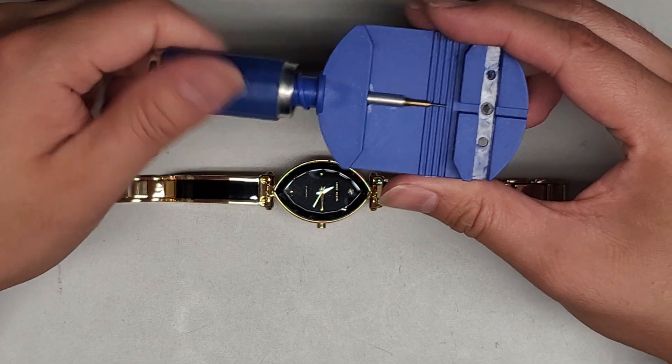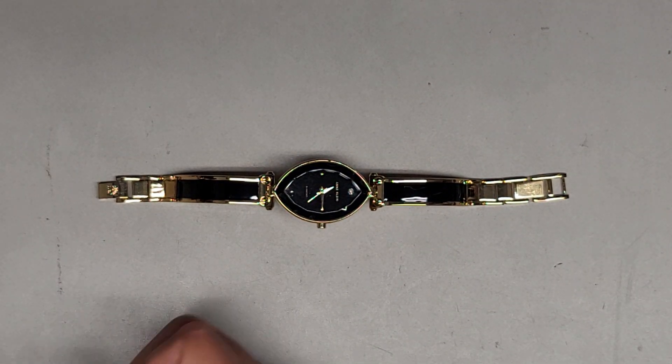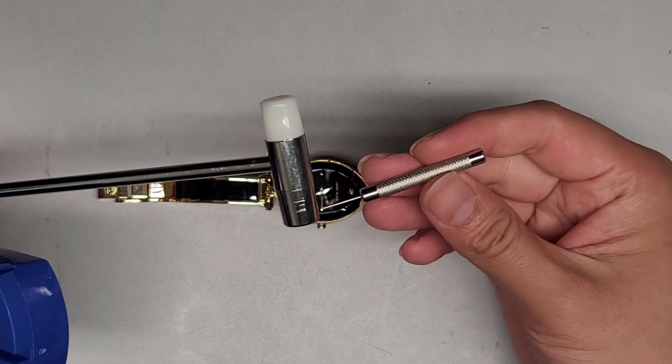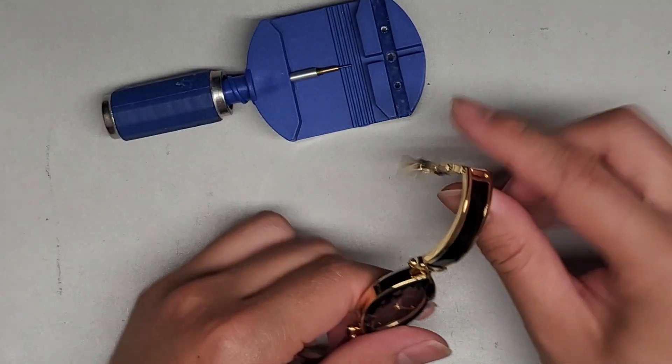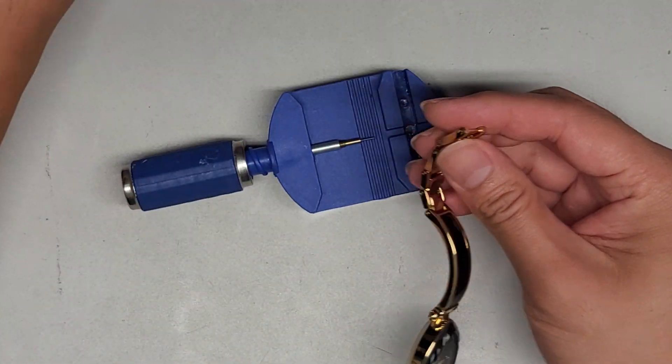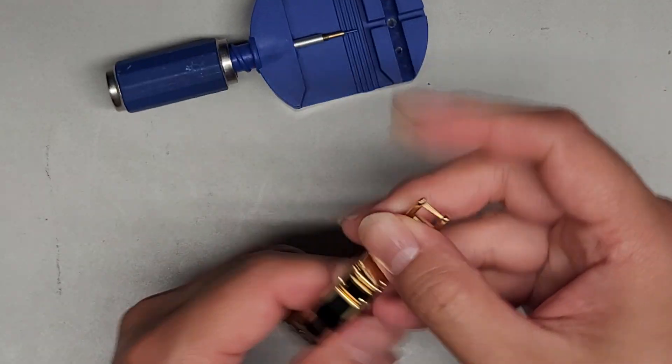So this has like this little screwing mechanism that will kind of push the pin out, but if it doesn't work that way, there's also this manual method that you can like hammer into place. So this thing basically, you put the watch band in here, you line it up, and then as you twist it, it can push it out.